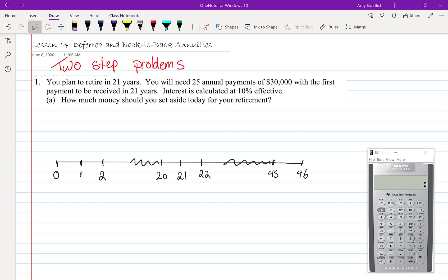Lesson 14: Deferred and back-to-back annuities. Today we're going to do a series of two-step problems. These problems are going to have two parts to them. In some of them, the first part is going to be a compound interest problem. We call that a deferred annuity. And in some of them, the first and the second are both going to be different types of annuities. We call those back-to-back annuities. Let's jump right in with a problem.